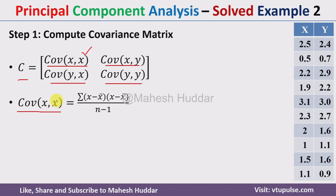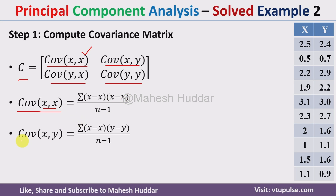To calculate covariance of (x,x), we use the formula: summation of (x minus x-bar) multiplied by (x minus x-bar), divided by n minus 1. To calculate covariance of (x,y), the formula is: summation of (x minus x-bar) multiplied by (y minus y-bar), divided by n minus 1, where n is the number of examples. Since there are 10 examples, the denominator becomes 9.